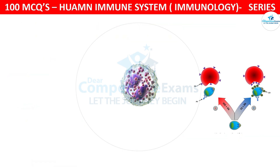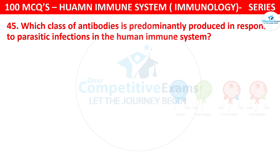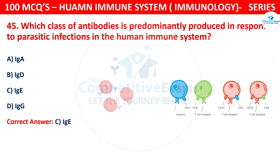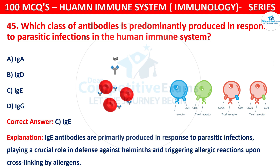Question number 45. Which class of antibodies is predominantly produced in response to parasitic infection in the human immune system? The options are IgA, IgD, IgE, or IgG. The correct answer is C, that is IgE. IgE antibodies are primarily produced in response to parasitic infections, playing a crucial role in defense against helminths and triggering allergic reactions upon cross-linking by allergens.